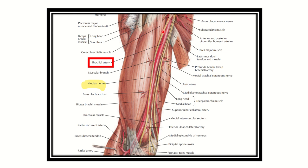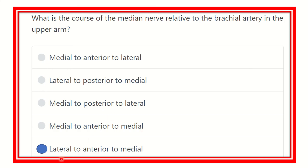In this second image, the median nerve is first located laterally, then at this point it lies anteriorly, and in the lower part of the arm it is located medially. This confirms the normal course of the median nerve related to the brachial artery. The answer is LAM — Lateral, Anterior, and Medial. Thank you all.